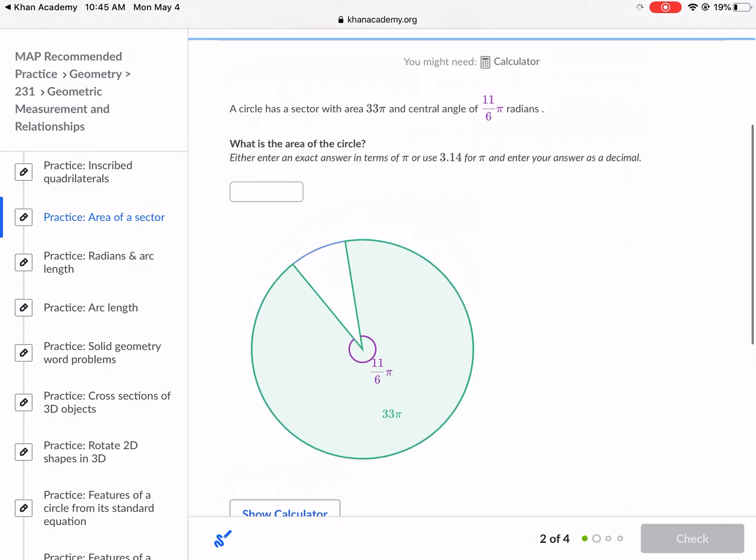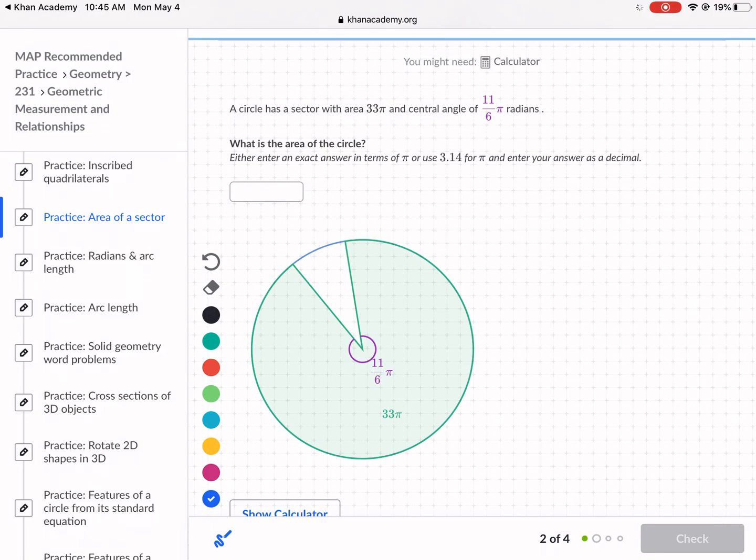Let's go ahead and do another one. A circle has a sector with area 33 pi and a central angle of 11 over 6 pi radians. What is the area of the circle? So when we're talking about radians here, we're talking about a different type of unit. So most of your geometry classes are going to talk about degrees. So there's 360 degrees in the circle. Now there's also 2 pi radians in a circle. So for those that are seeing radians for the first time, essentially the process is the same, but now our measure is going to be a little bit different.